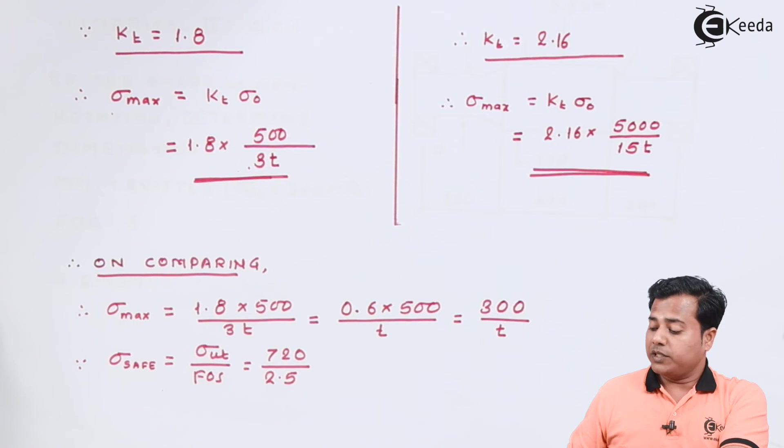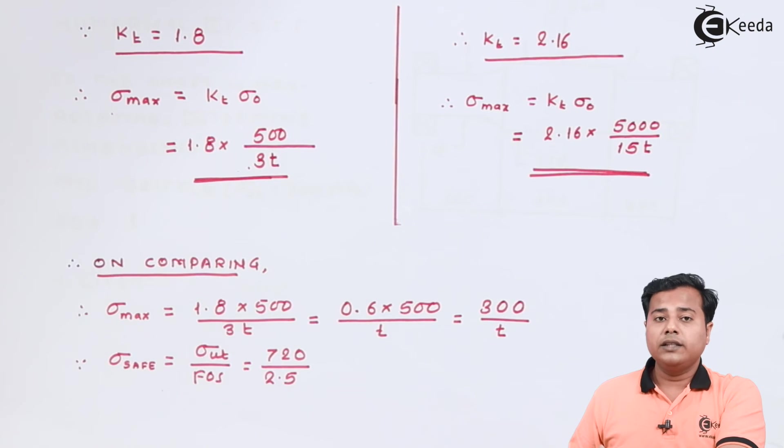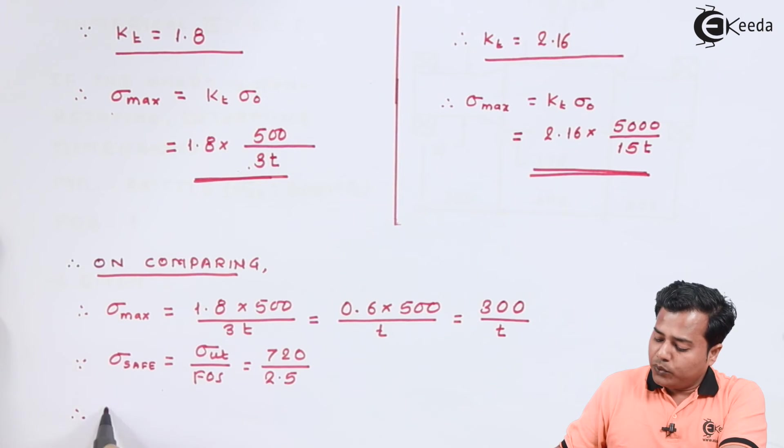So that the safe value will be the maximum value that I can consider and therefore 720 by 2.5 will be equal to 300 divided by t.